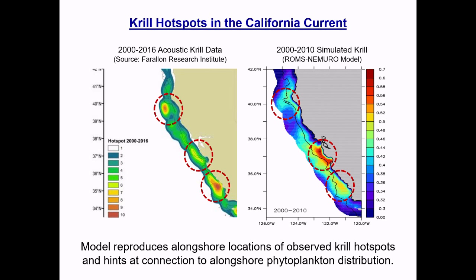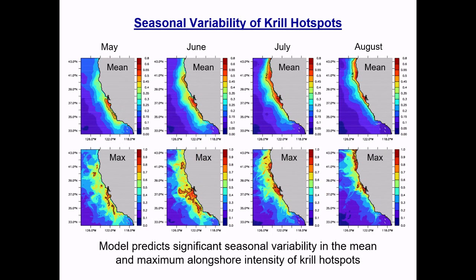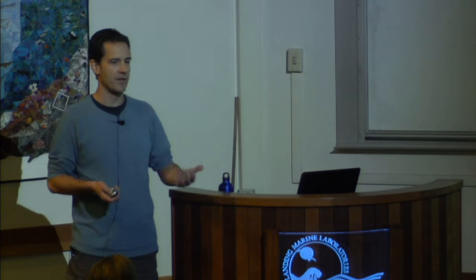Since observations are limited to May–June, we can use the model to understand the full seasonal picture. There's a fair amount of seasonality in the location and intensity of those krill hotspots. Showing minimum and maximum krill concentration from May through August, the three-hotspot pattern is most representative of May and June. By July and August, the southern hotspot disappears, the Mendocino hotspot shifts north, and you end up with two broader hotspots. This is where modeling has great value — placing observations in the context of overall seasonal and interannual variability.